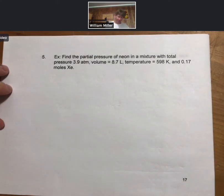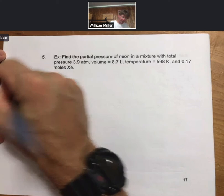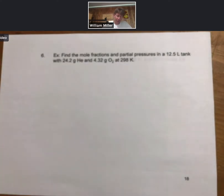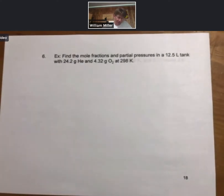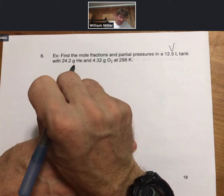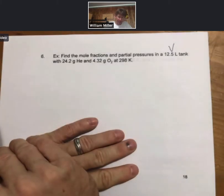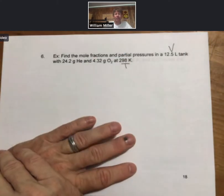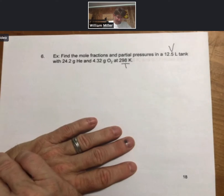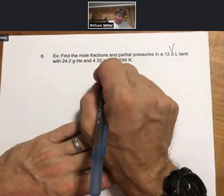This is going to be a companion problem. This one is going to actually ask for the mole fractions and partial pressure. So we'll work this one. In a 12.5 liter tank, that's my volume, with 24.2 grams of helium and 4.32 grams of oxygen at 298 Kelvin. So you'll notice you have your temperature and you have your volume. And that is enough. And we have grams, so we can get moles.